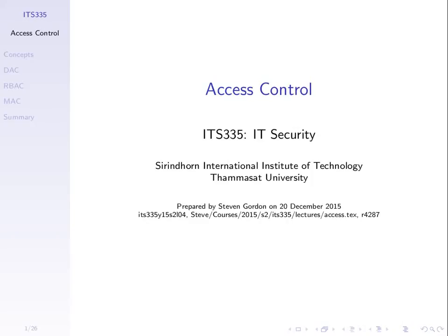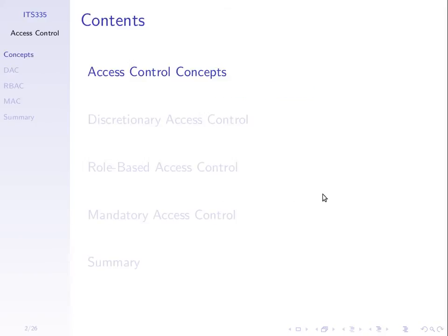Access control is about controlling who can do what on our system. We'll talk about some general concepts, then go through three different types. Discretionary access control we'll cover first, using Linux file system as an example. Role-based access control talks about roles like manager, lecturer, and student. Mandatory access control uses concepts like top secret, secret, and confidential, which we'll see how they are used.